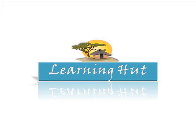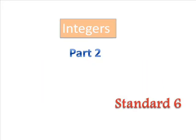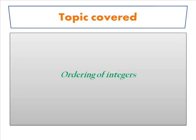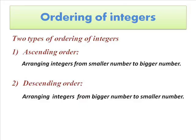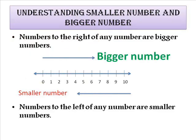Hi students, welcome to my channel Learning Heart. Integers for sixth standard. Today I am going to cover ordering of integers in this video. Ordering of integers are two types: first type is ascending order and second type is descending order. Ascending order is arranging integers from smaller number to bigger number, whereas descending order is arranging integers from bigger number to smaller number.